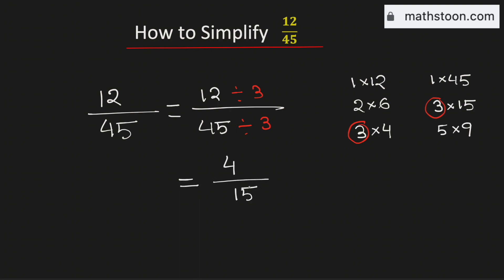So, we can say that 4 over 15 is the simplified reduced form of the fraction 12 over 45. And this is our final answer.